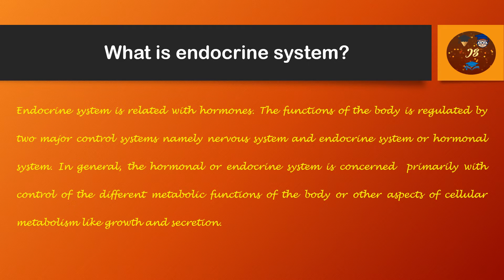In general, the hormonal or endocrine system is concerned primarily with the control of different metabolic functions of the body. This is very important because without metabolism we cannot get energy from food. Other aspects of cellular metabolism include growth and secretion — for example, from childhood a baby grows into a full person, and this growth is controlled by the endocrine system.